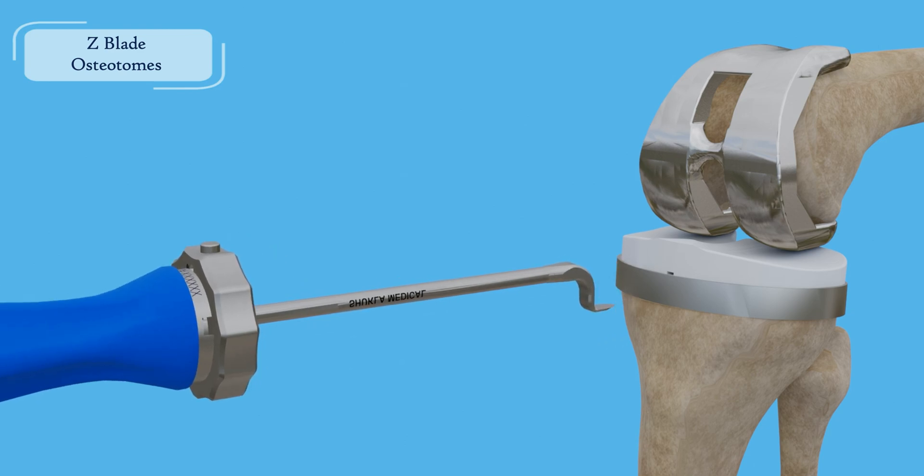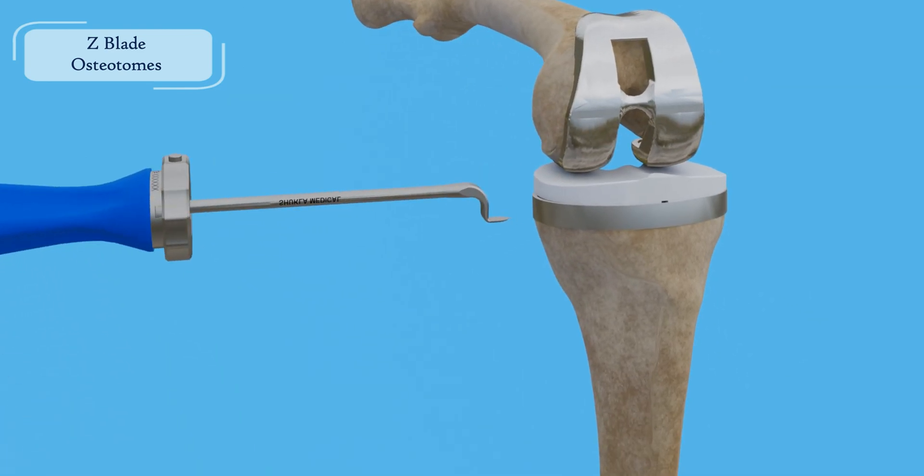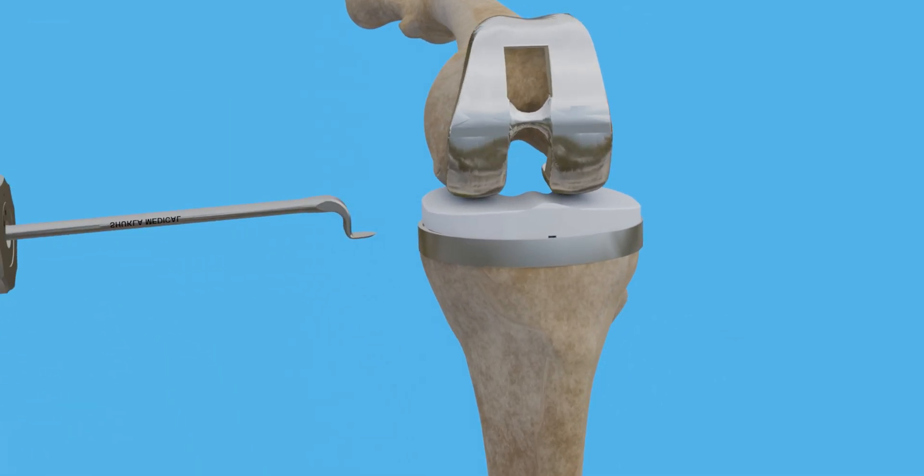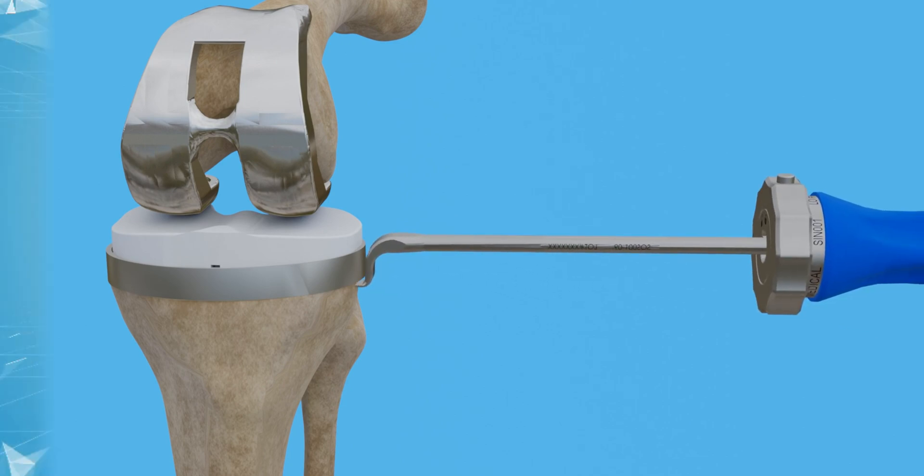Use the grooved mallet to strike against the handle, breaking up the interface around all sides of the implant. Strike the impact cap for antegrade force.